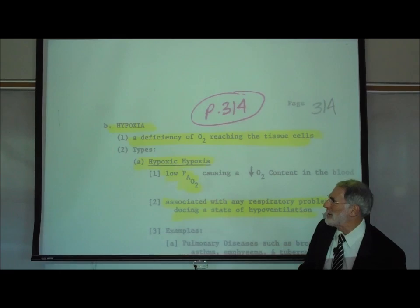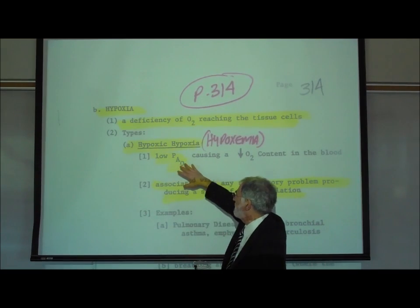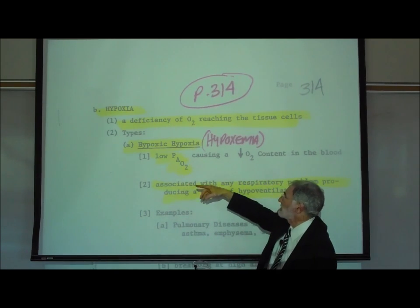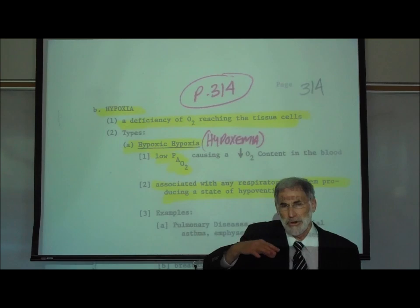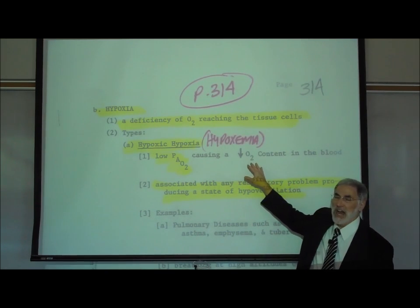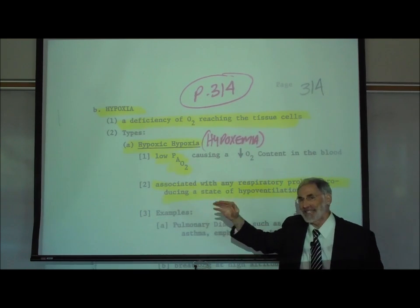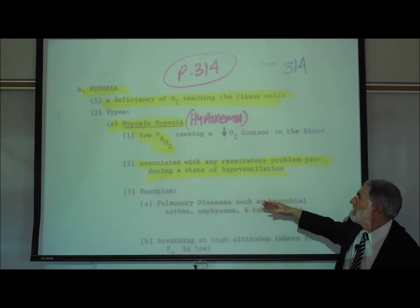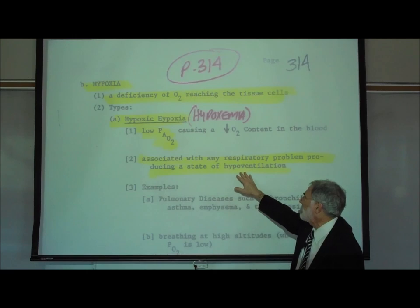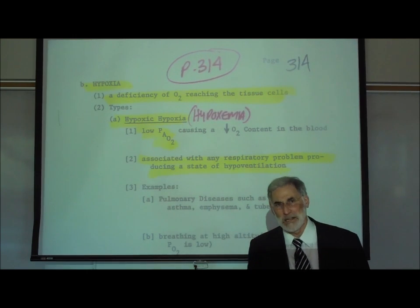The first is called hypoxic hypoxia. It is due to a decreased amount of oxygen in the lungs, in the alveoli of the lungs. Because there's less than the normal amount of oxygen in the lungs, that results in a decrease in oxygen content in the blood — thus hypoxemia, meaning low oxygen in the blood. Basically, you get hypoxic hypoxia or hypoxemia anytime there's a respiratory problem creating a state of hypoventilation.